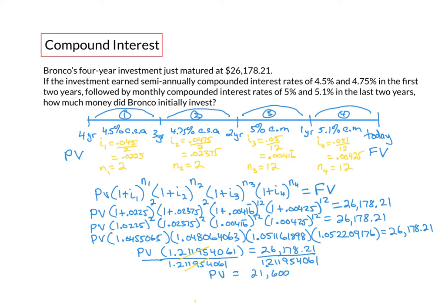And the present value ends up being 21,600 decimal 0188. Now because we're talking money we round to two decimal digits. Right here we look to the digit to the right, it's not five or bigger so we're going to leave this here and round this number to $21,600 even.